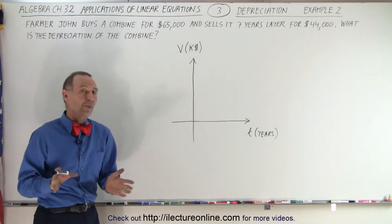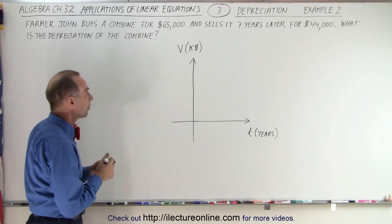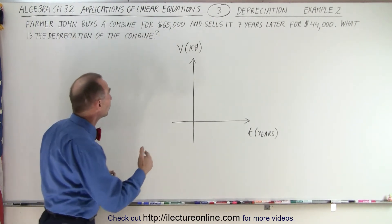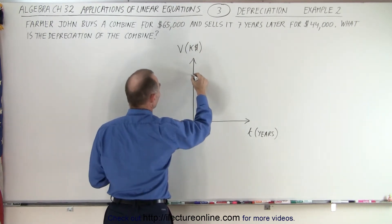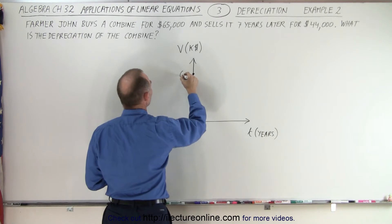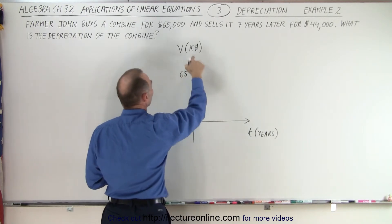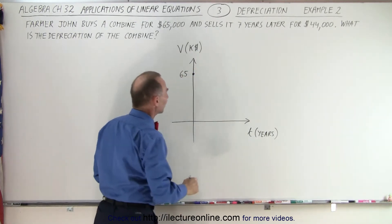So again, first what we want to do is graph what's happening. Remember that the initial value that the combine has is what we pay for it, or in this case, what Farmer John pays for it. So here the initial value is $65,000.